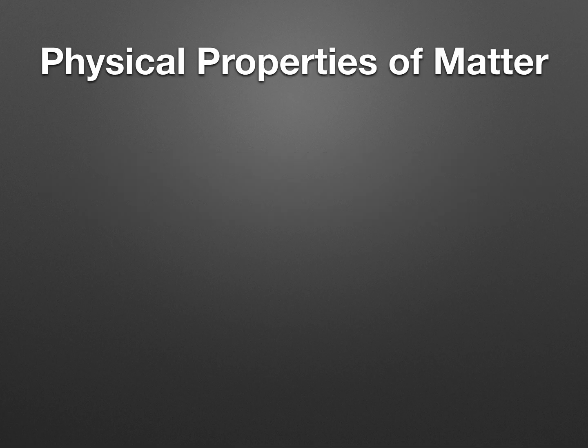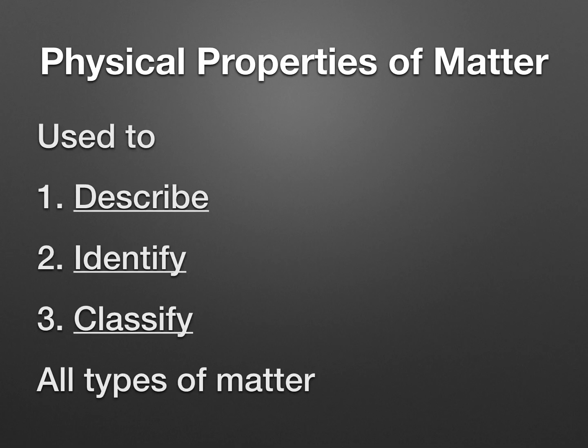First, we're going to start with what physical properties of Matter are used for in general. They are used for three things: to describe, identify, and classify all types of Matter. Describing means being able to describe it observation-based. Identify means to actually identify what the piece of Matter is. And classify means to sort it into groups based on common features and attributes.